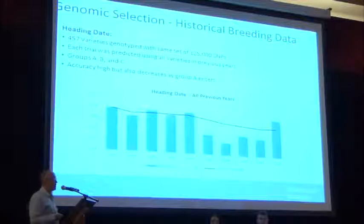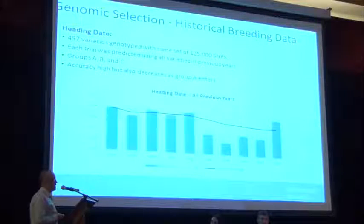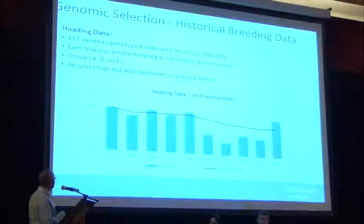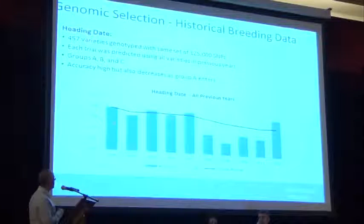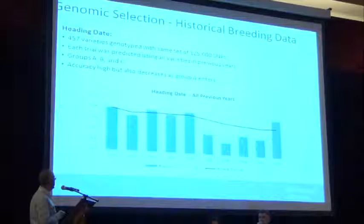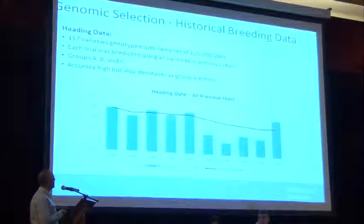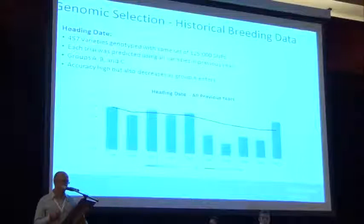We also examined heading date with around 450 varieties using the same validation scheme — for any given year, using everything up to two years prior as the reference population. Accuracies are higher than for biomass, again because heading date has higher heritability. They became somewhat variable in later years with all three groups together, showing the same issue.